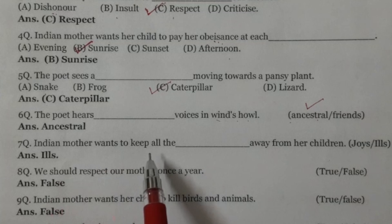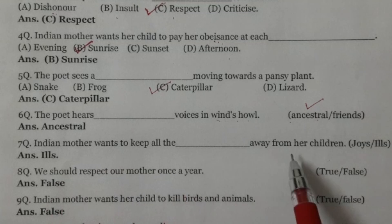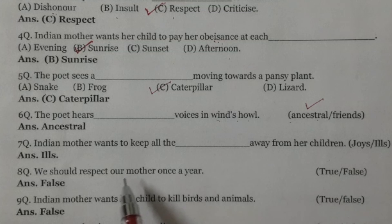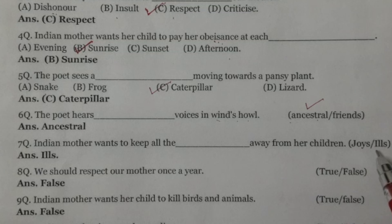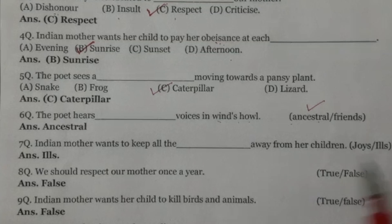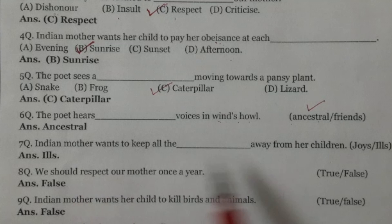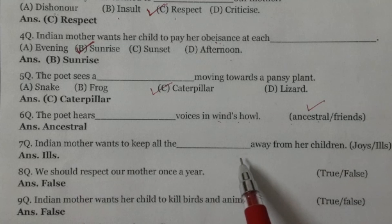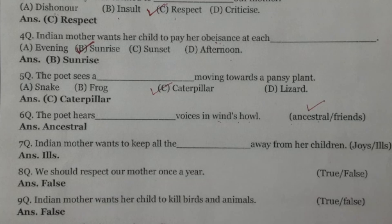Question number 7: Indian mother wants to keep all the dash away from her children. Two options: joy or the ills. Ills hunde ne buriyaan cheezan. Jadi parti mata hegi hai, wo apne bachcheyan ton har buraayi nun dur rakhna chahundi. The right option is the ills.